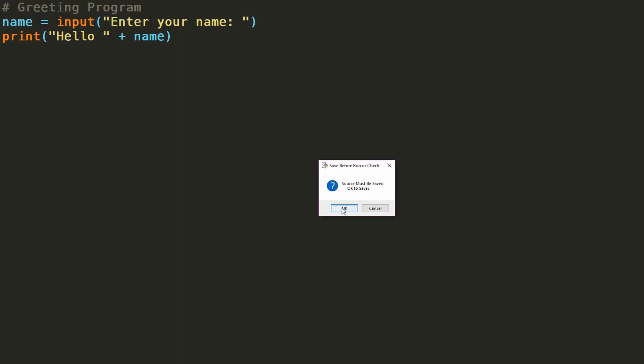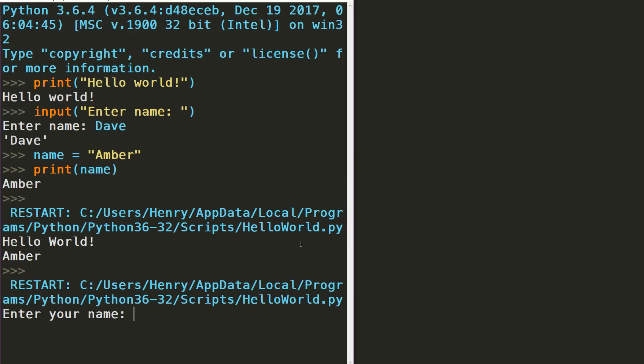Once you've got your code working, try running it again. And there we have it! We've created a very simple program using the print command, the input command, and a variable along the way.